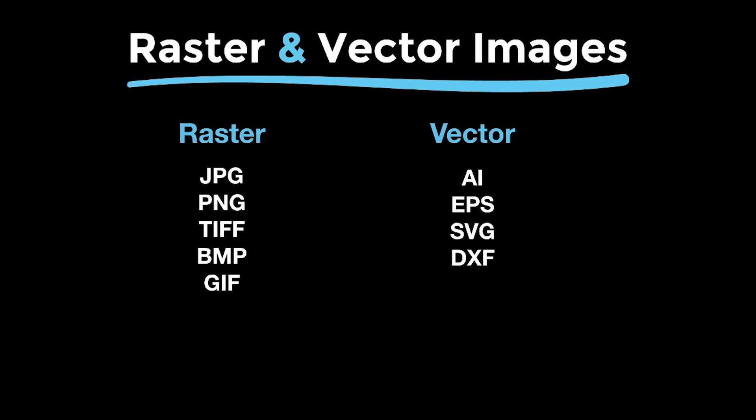I say "usually" because sometimes you'll be given raster images like photos that have been placed into an AI file, which does not make that photo vector. With raster images, they are made up of pixels, and vectors are made up of mathematical equations — although you as an artist do not have to worry about that part. Let's switch over to Photoshop so I can show you the difference, and then we'll go to Illustrator for vectors.